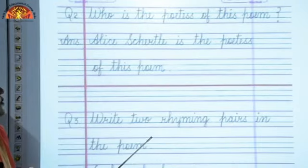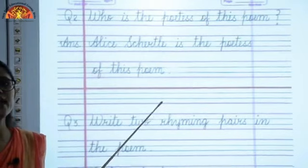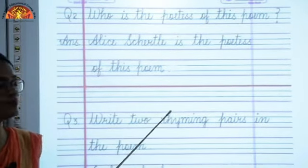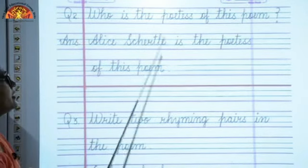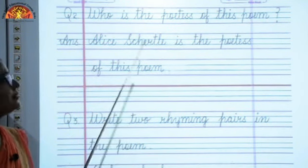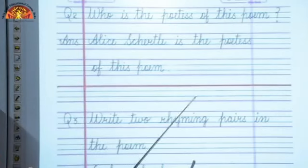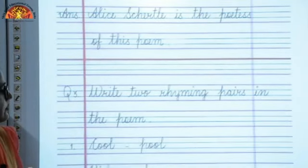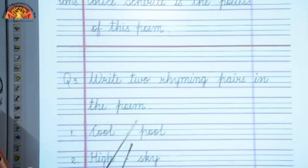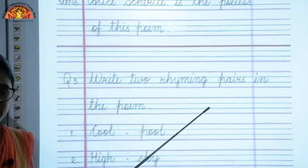Who is the poetess of this poem? As I told you in the starting, Alice Shettle is the poetess of this poem. Alice Shettle has written this poem. Write two rhyming pairs in the poem — you have to write two rhyming pairs from the poem: that is cool and pool, high and sky, which rhyme with each other. We call them rhyming words.